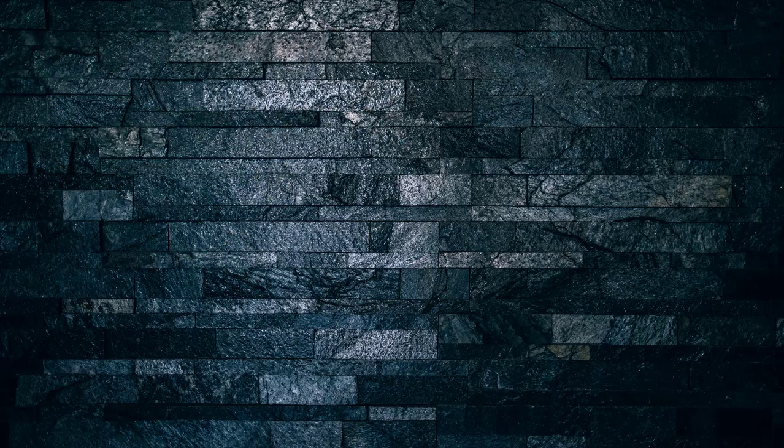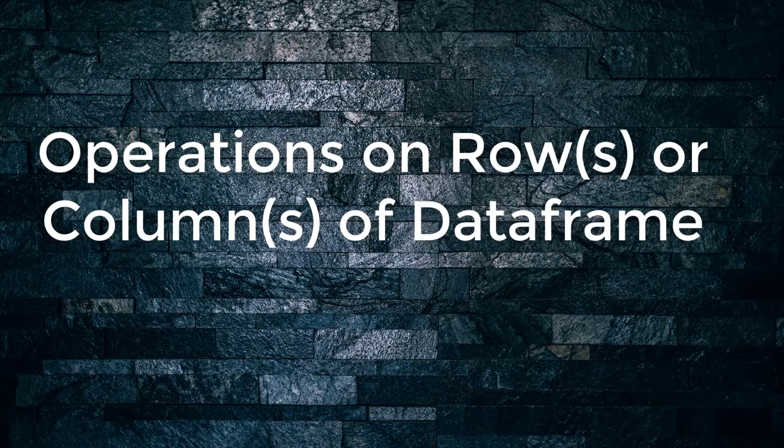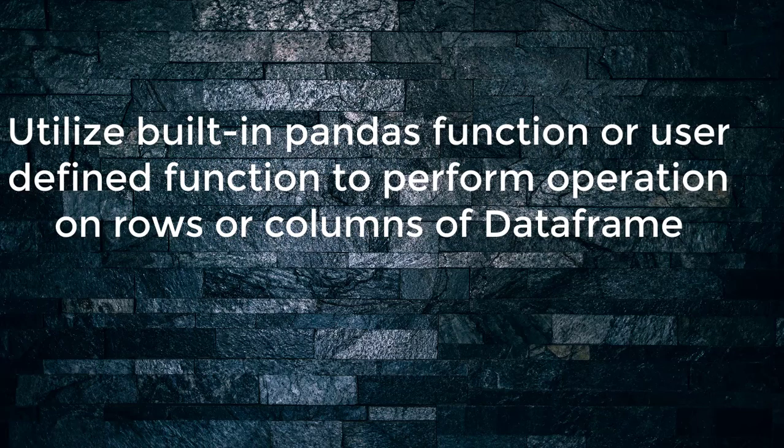I will also cover user-defined functions. The idea is to utilize lambda and applymap to apply specific functions on each and every row or column of a DataFrame. These functions come in handy when we want to apply specific operations — either built-in functions like square root, square, addition, or subtraction — or our own user-defined functions on rows or columns.